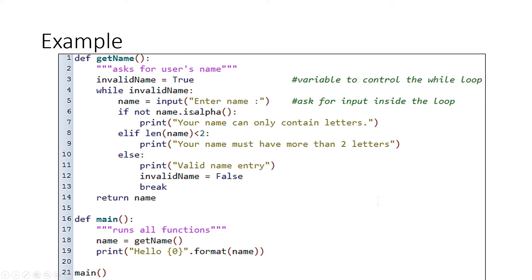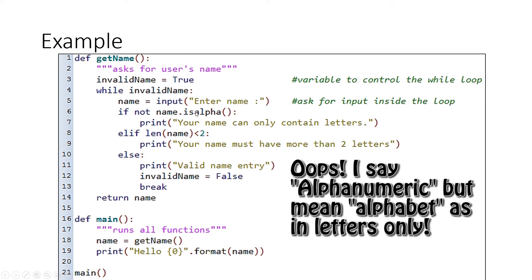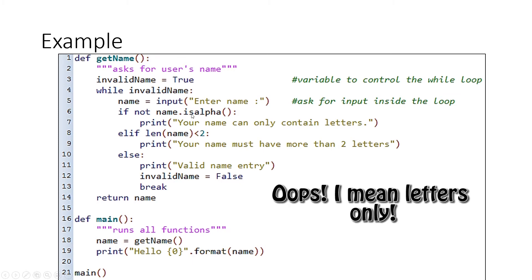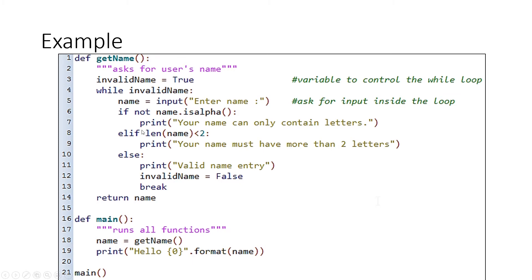It says while that name is invalid, so it's going to keep doing this loop until invalid name becomes false. It's going to ask for a name and store it in the variable name. Then the next line checks if the name is alpha — but it says not. So in other words, if it's not all letters, it'll say 'your name can only contain letters.' Now assuming it is all letters or numbers, it's then going to do the next check: the length of the name must not be less than two. If it passes both checks, it sets invalid name to false, and then breaks out of the loop.